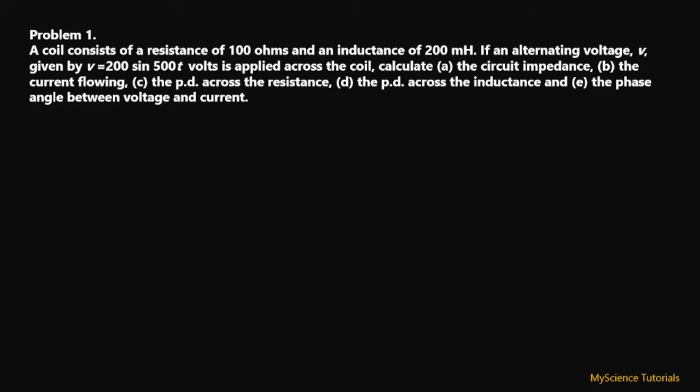We have a question here. A coil consists of a resistance of 100 ohms and an inductance of 200 millihenry. If an alternating voltage V given by V = 200 sin(500t) volts is applied across the coil, we have to calculate: (a) the circuit impedance, (b) the current flowing through the circuit, (c) the potential difference across the resistance, and (d) the potential difference across the inductor.